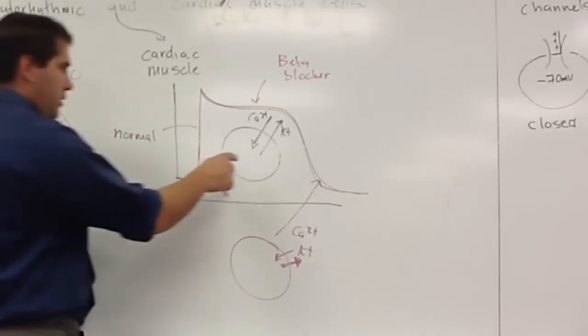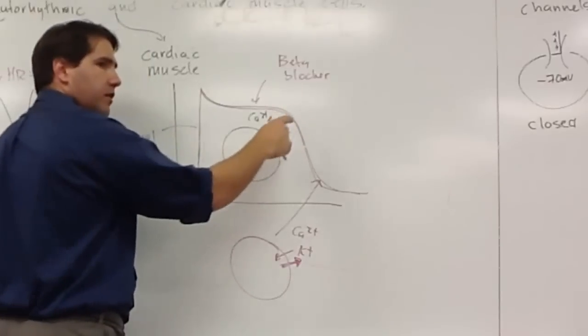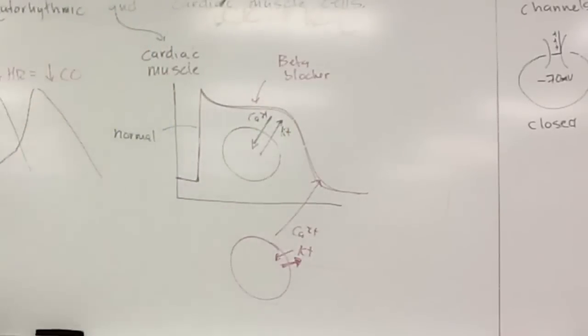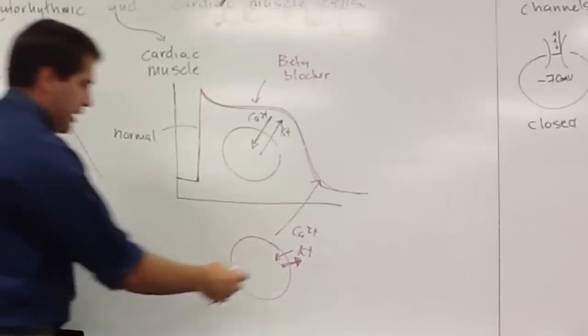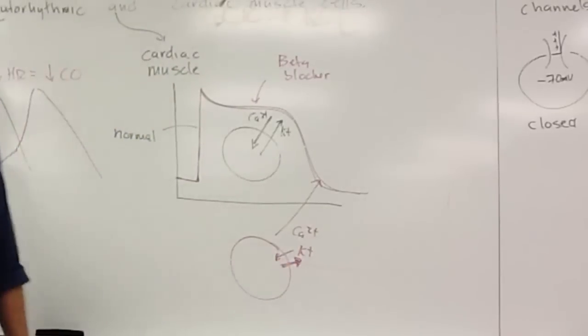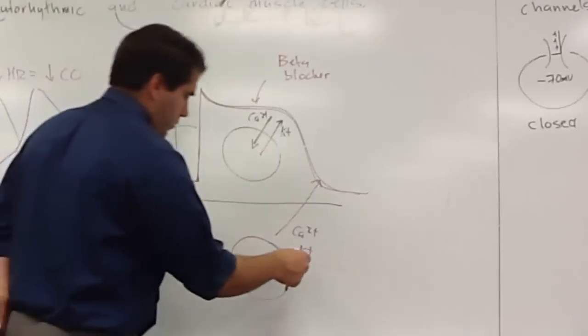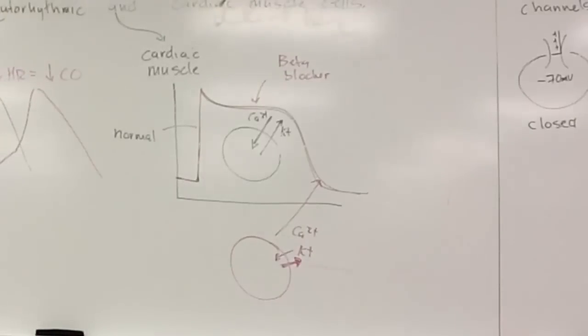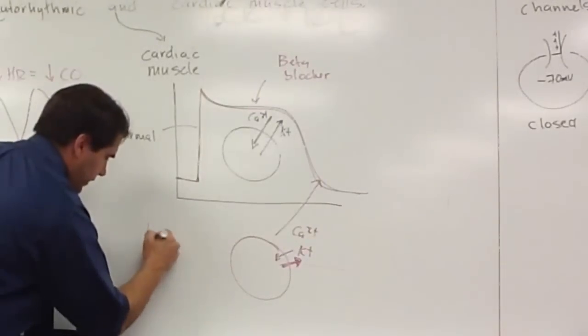So here what I'm trying to draw is lots of potassium leaving. And since that's linked to calcium, a lot of calcium can come in. In beta-blocker, you block the potassium channel, which I'm trying to just draw as a smaller arrow. Not as much potassium can leave, which means not as much calcium can come in. And since that calcium is causing muscle contraction, this will decrease contractility.